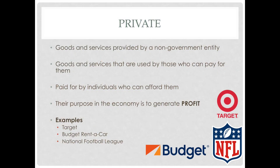Private goods and services exist to generate profit. For example, Target, Budget Rent-A-Car, and the National Football League provide goods and sometimes services to the community, but they are paid for by people who can afford them. If you want to purchase something at Target, you have to have money for it, and Target's primary goal is to make profit. If they don't make profit, Target will cease to exist. If a public park doesn't make profit, that's okay because taxes collected will help keep it running.